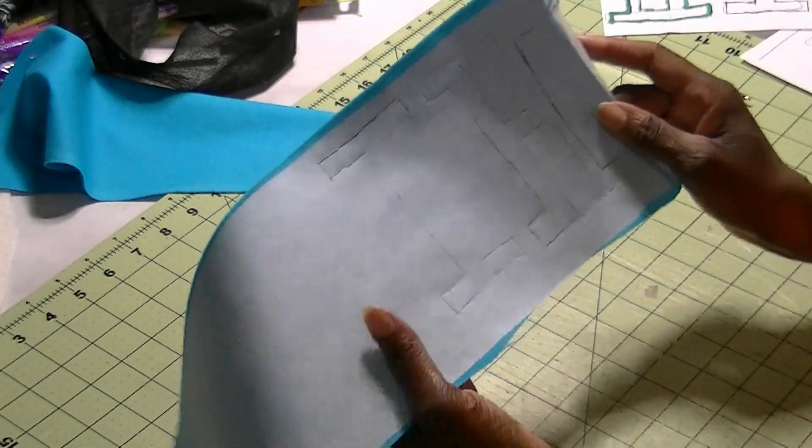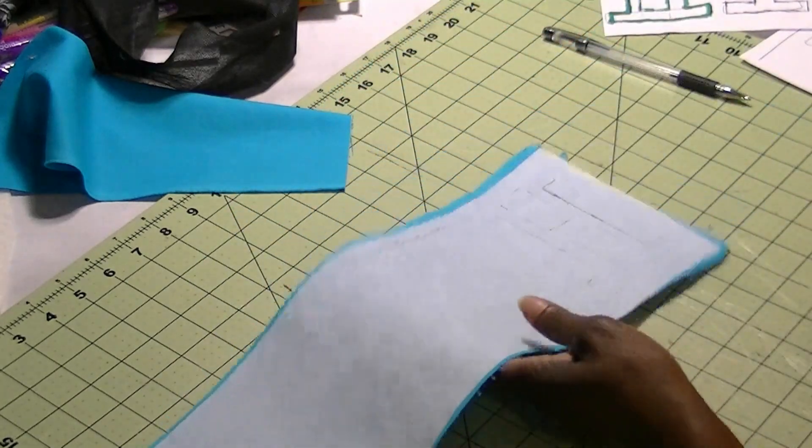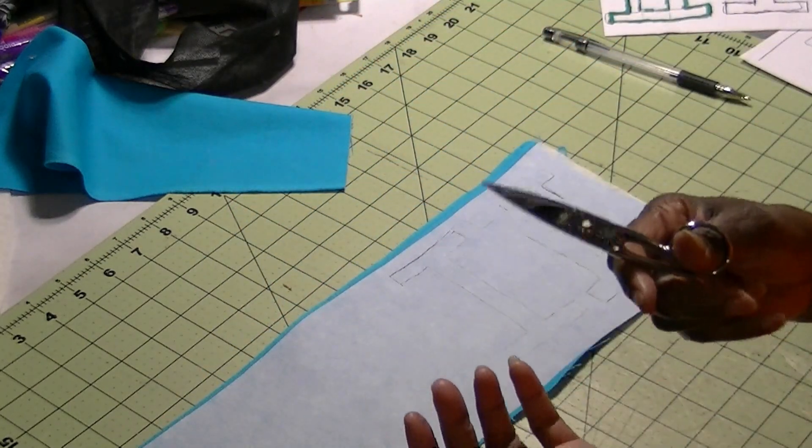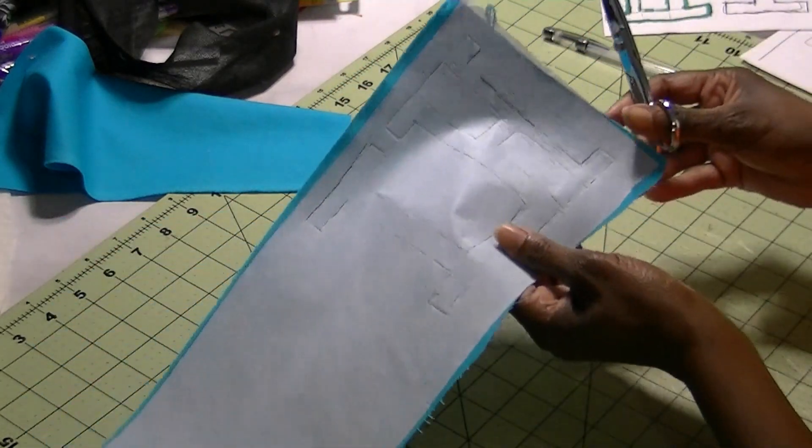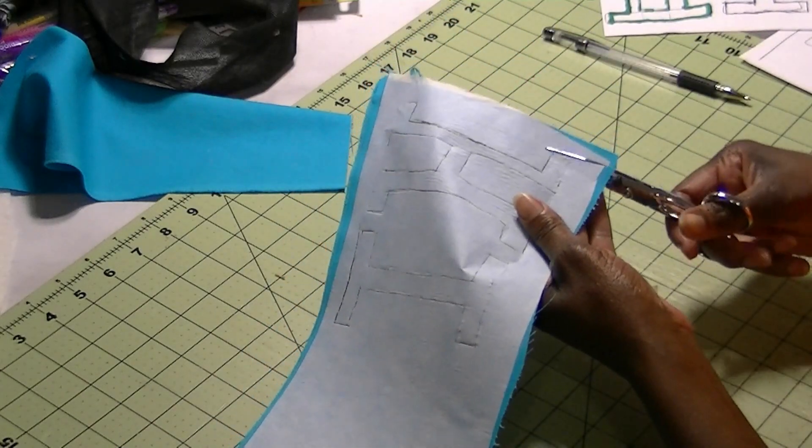So those are my letters. So what I'm going to do now is you want to go ahead and get you a good pair of scissors. I have a good pair of embroidery scissors. And I'm going to go ahead and just cut out the letters.